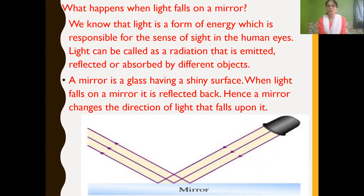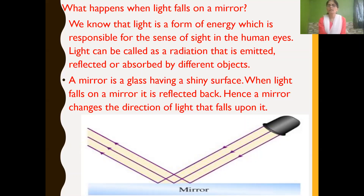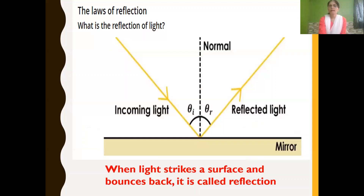A mirror is a glass having a shiny surface. When glass is coated with a thin coating of silver, it gets converted into a mirror. When light falls on a mirror, it gets reflected back, because a best reflector should have a shiny surface. Hence, a mirror changes the direction of light that falls upon it.